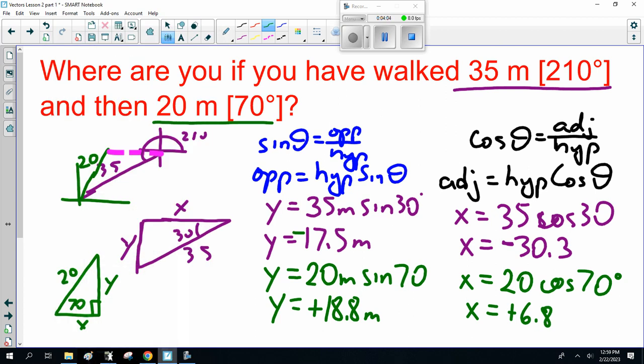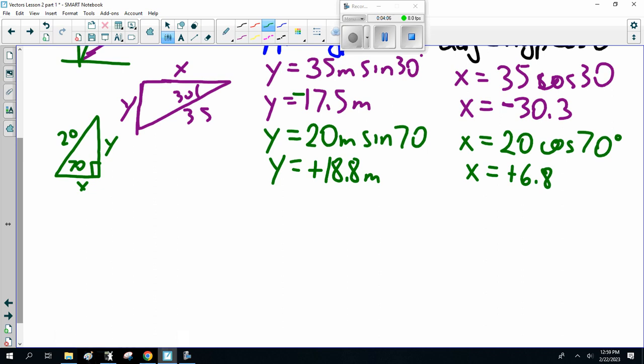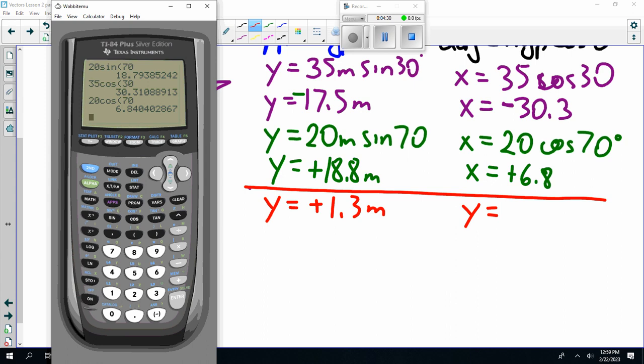Now, here we have to add our x and our x and our y and our y. So, change colors. So, y total is 17.5, minus 17.5, plus 18.8, 1.3 meters. And, my x total is minus 30, plus 6.8. I can't do that in my head. So, 6.8, minus 30.3, minus 23.5.